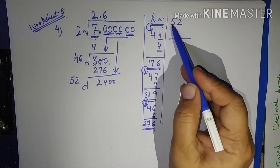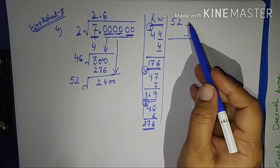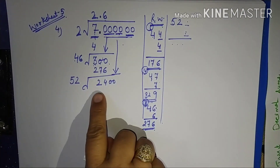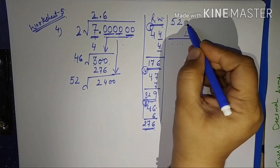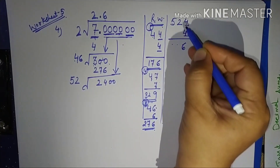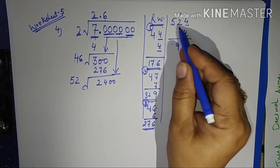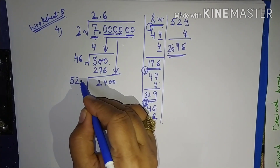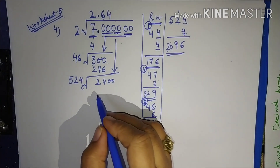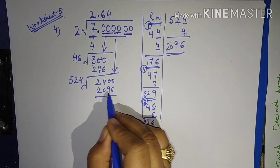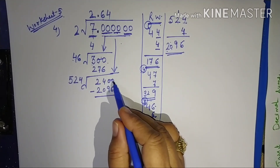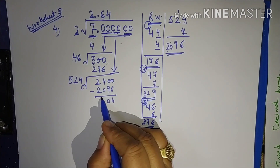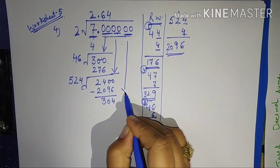Now I have 52 and I want a product equal to or less than 2400. If I place 5: 525×5=2625, which exceeds 2400. So let me try with 4: 524×4=2096. 2400 minus 2096: borrowing gives remainder 304. I'll take the next pair of zeros, giving 30400. And 524 plus 4 gives 528, so the next divisor starts with 528.